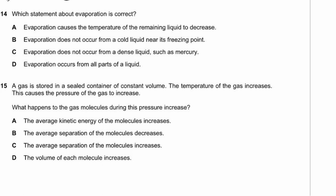Question 14. Evaporation occurs at the surface of a liquid where some molecules have enough kinetic energy to escape. Those molecules take more than the average kinetic energy with them, so the remaining liquid gets cooler. Option A is correct: evaporation causes the temperature of the remaining liquid to decrease. Evaporation occurs from all liquids, not just from their surface overall.